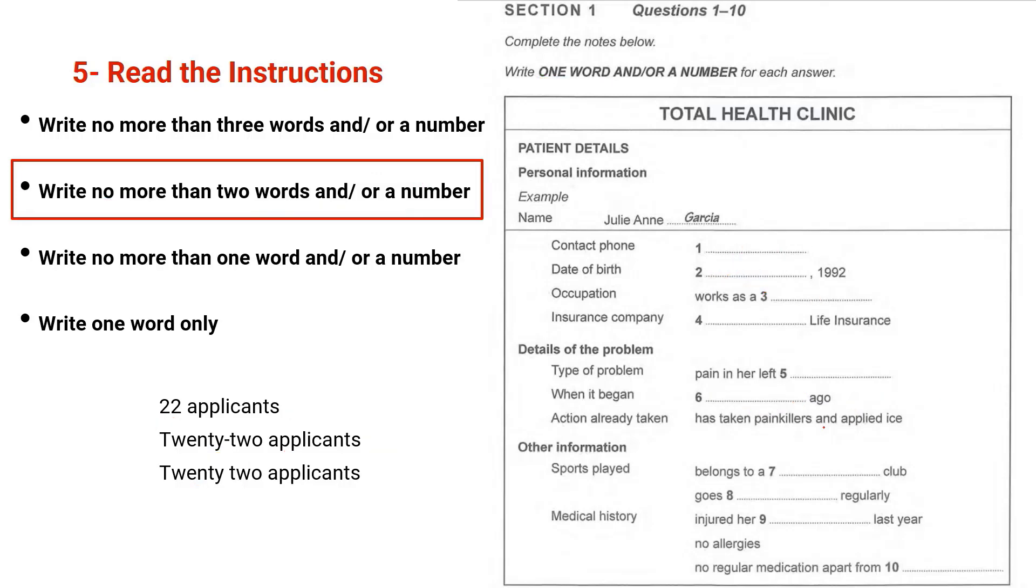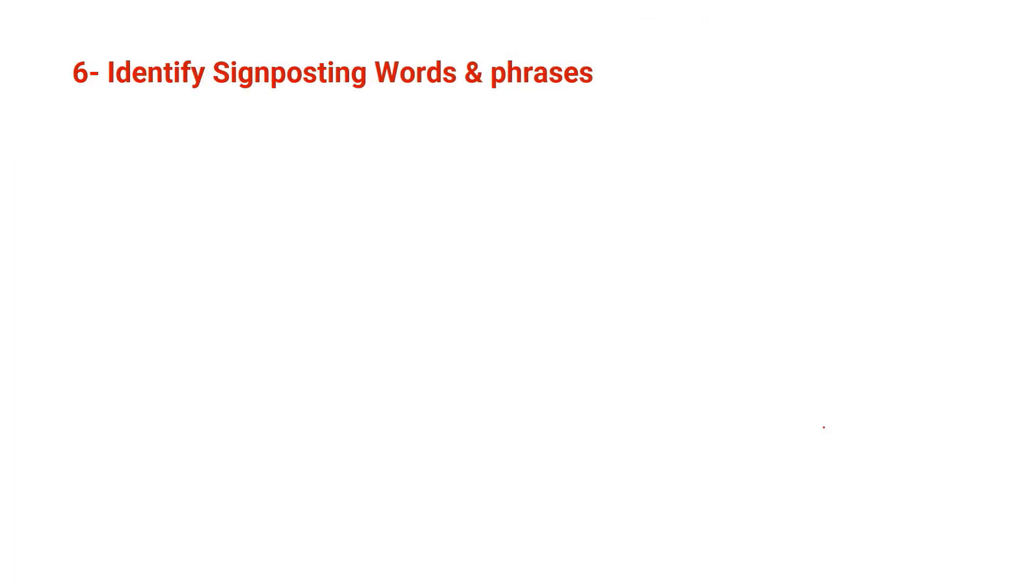And now let's move to the sixth strategy, which is identifying signposting words and phrases. Signposting words and phrases are different words and phrases that guide you through what's being said. They come usually in section four as it's a long talk. Section four is a monologue, and it could be a lecture by a professor or a presentation by a student or a talk by a university staff member. And because it's a long monologue, you might get lost. So identifying signposting will help you keep track.